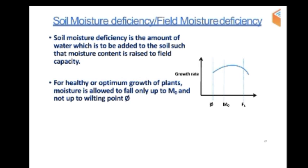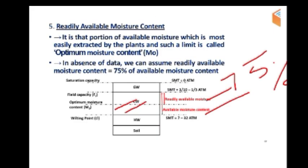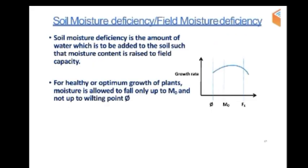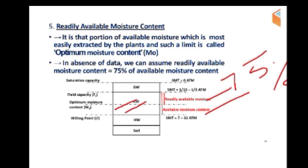If you look at field moisture deficiency, soil moisture will be allowed to fall only up to M0 and not up to wilting point. For optimum growth of plants, the moisture rate is followed. The field capacity is the optimum moisture content.